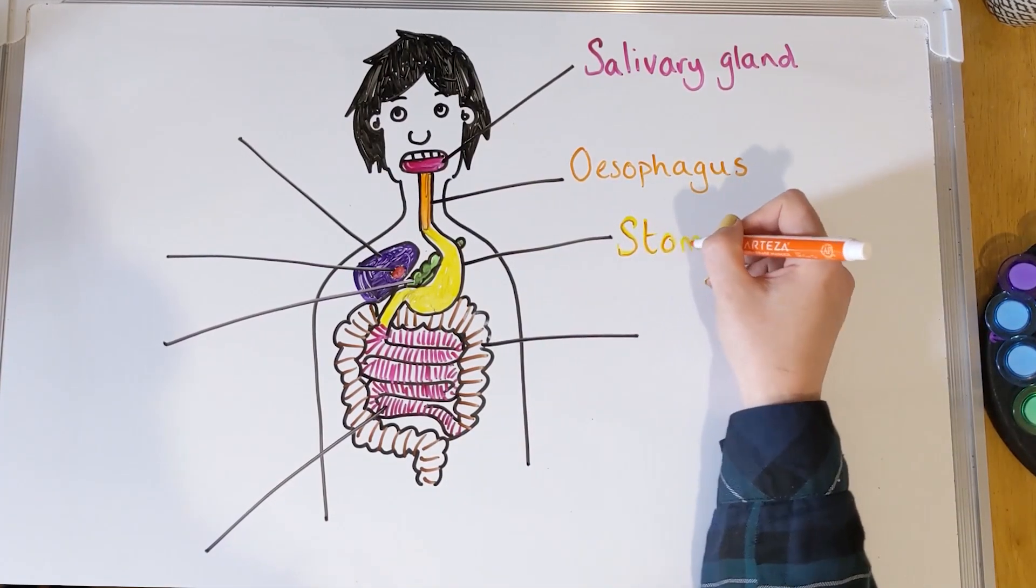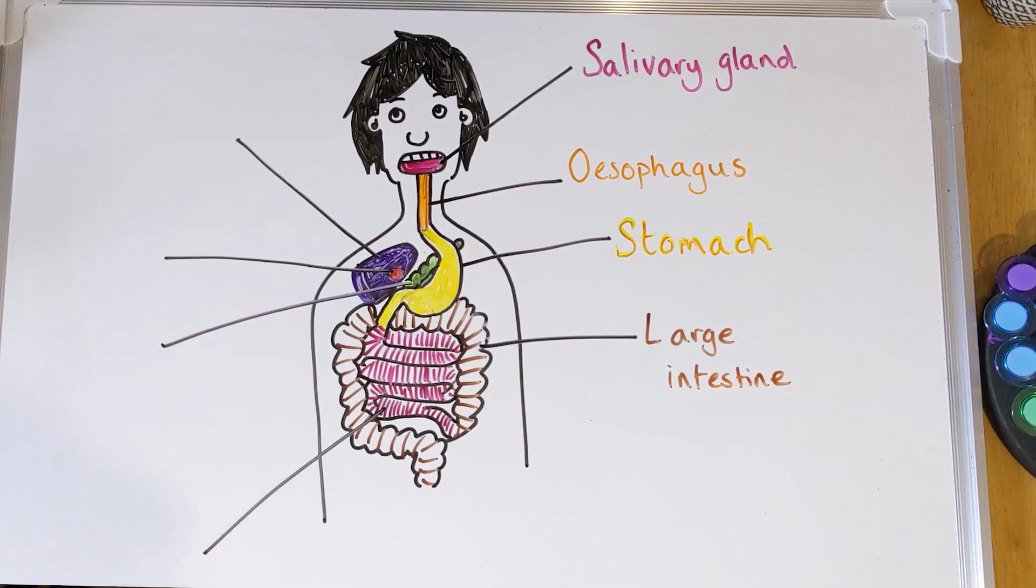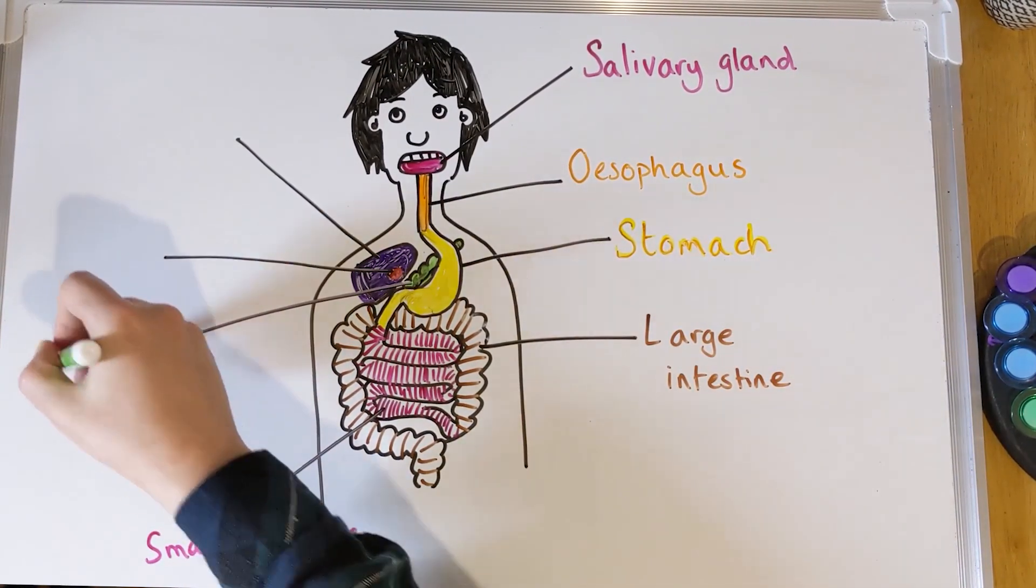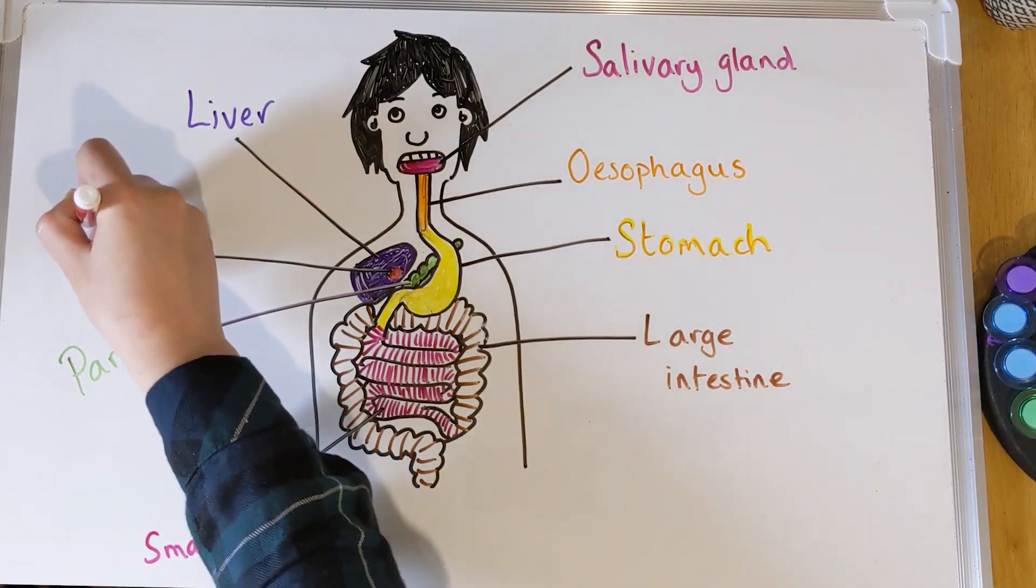Then tucked behind the stomach in green you've got the pancreas, which I like to call the enzyme factory. It's the part of your body that makes all the enzymes that you need to break down food.